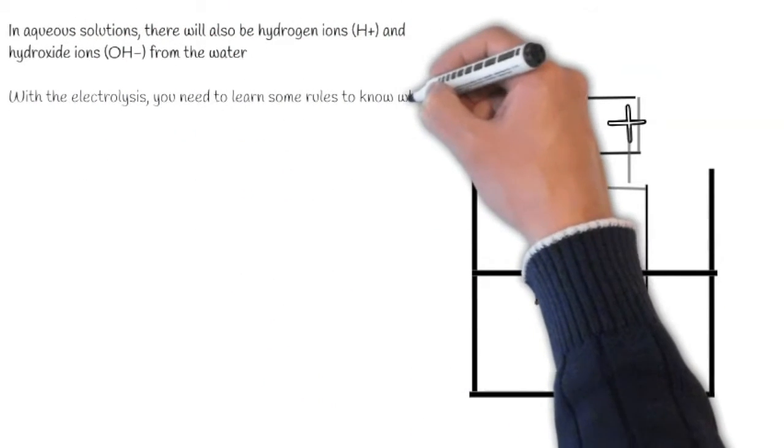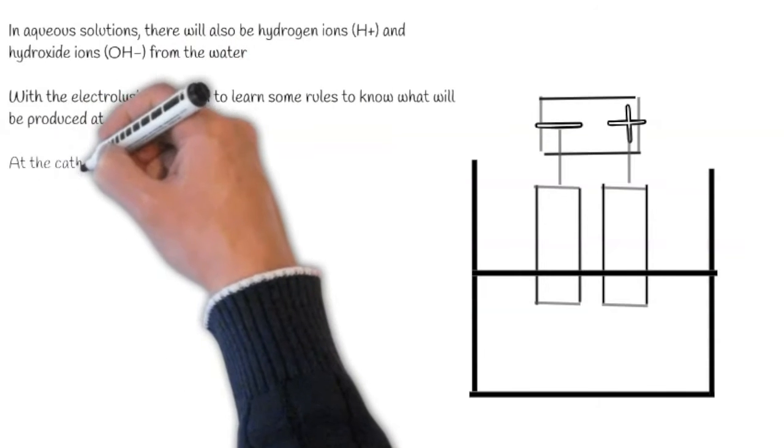With electrolysis, you need to learn some rules to know which will be produced at each electrode.